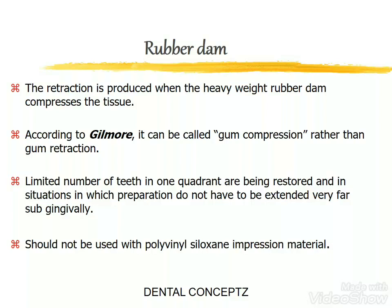Under mechanical methods, we use rubber dam. The retraction is produced when the heavy weight rubber dam compresses the tissue. According to Gilmore, it can be called gum compression rather than gum retraction. It is used when a limited number of teeth in one quadrant are being restored and when preparations do not need to be extended very far sub-gingivally. It should not be used with polyvinyl siloxane impression material because the latex rubber dam can interfere with its polymerization.